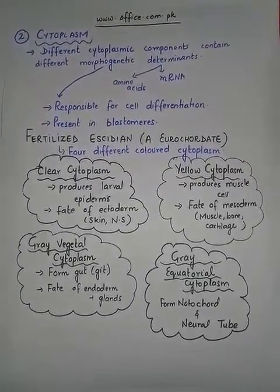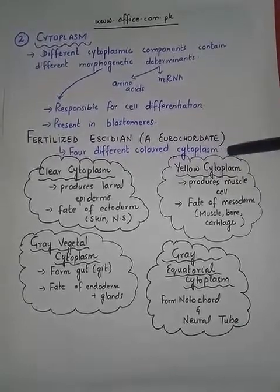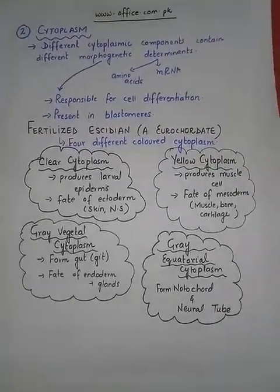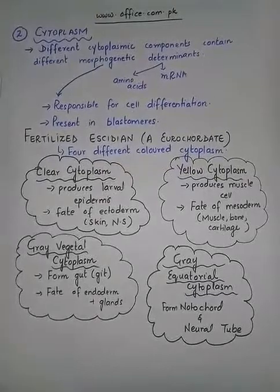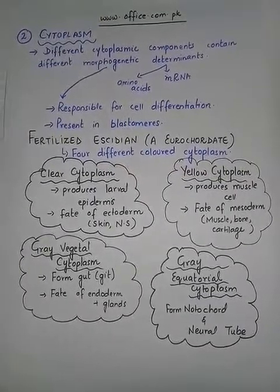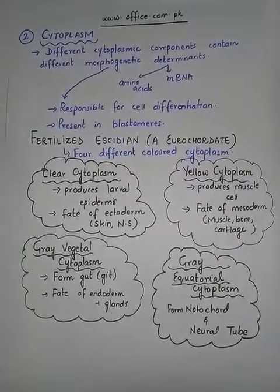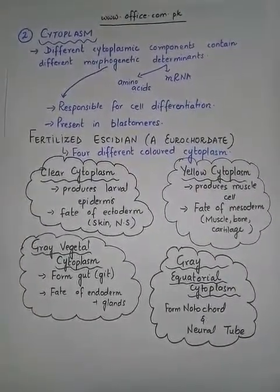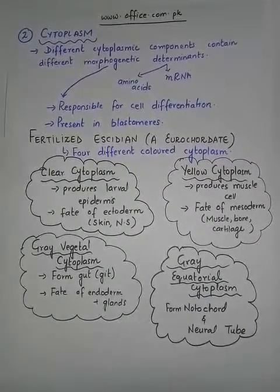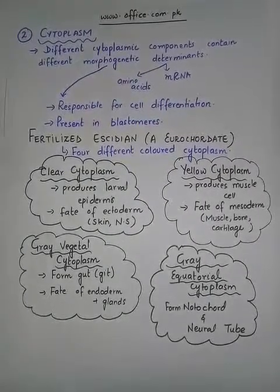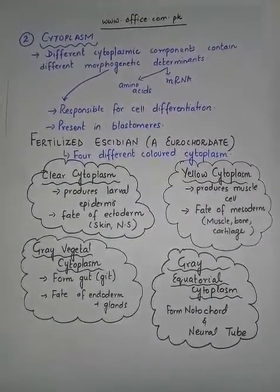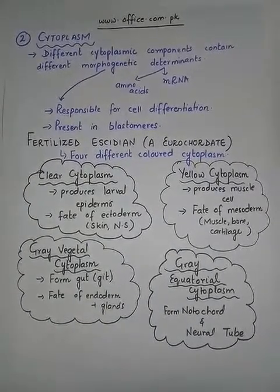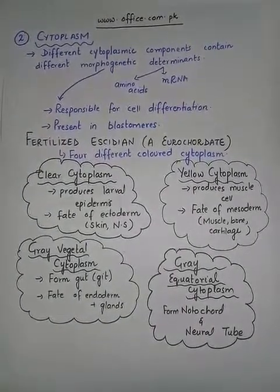The yellow cytoplasm produces the muscle cells and decides the fate of mesoderm — the muscles, bones, and cartilage. Every colored cytoplasm is responsible for controlling the production of a specific type of organ and tissue.